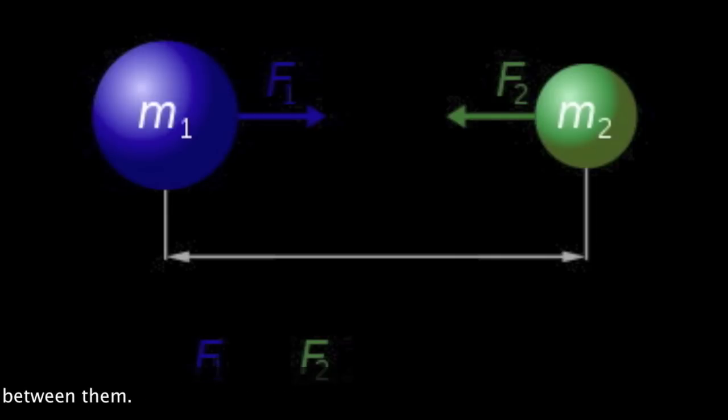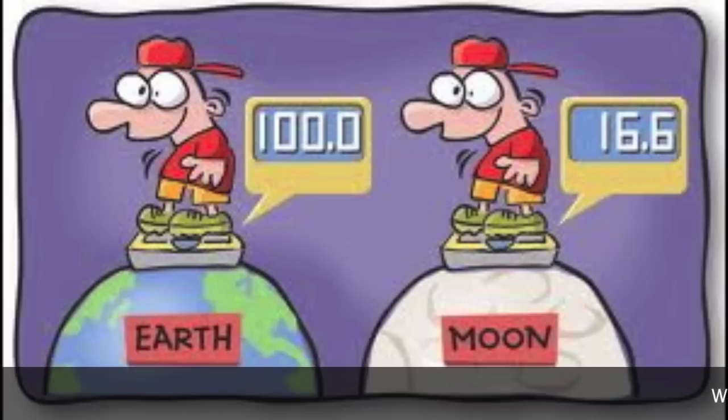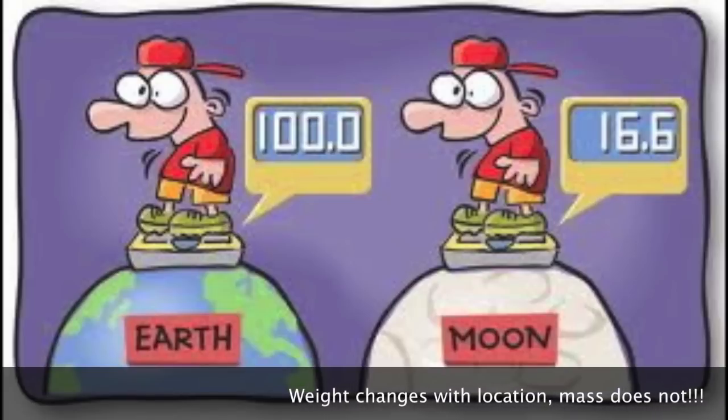Mass is the amount of matter in an object. Mass does not change depending on your location. So if you're a thousand kilograms on earth, you're going to be a thousand kilograms on the moon.